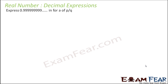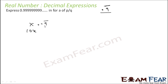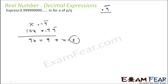Next, we have to express 0.9999 in the form of p by q. This is nothing but 0.9 bar. The point is just before the bar, and the number of repeating parts is 1. So assuming x equals 0.9 bar, we multiply by 10: 10x equals 9.9 bar. Subtracting: 9x equals 9, so x equals 1. Therefore, 0.9999 is actually equal to 1.